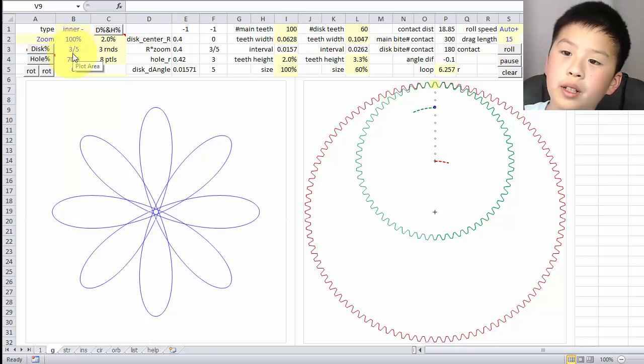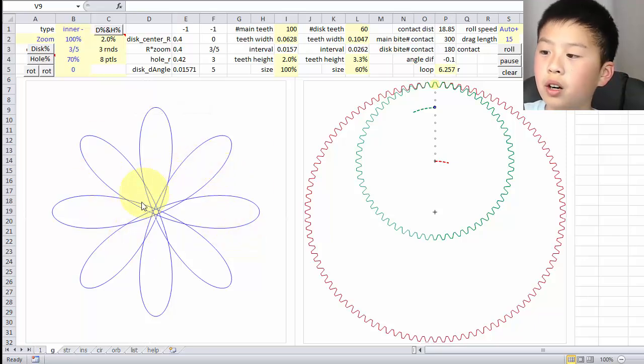There are two combinations that you can change that will affect the shape of the spirographs. The first one is the disk size. And the next one is the distance that the hole will be from the center within the size of the disk. And that would be like where you put your pen.